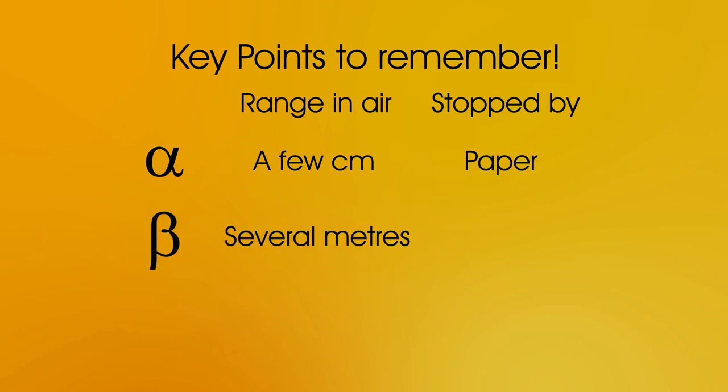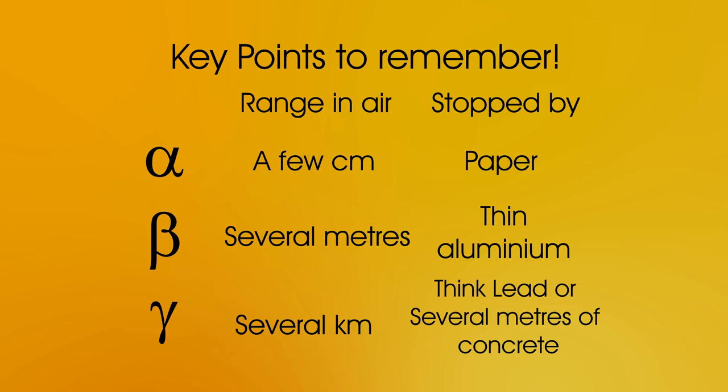Beta has a range of a few metres in air and is stopped by thin aluminium. And gamma has the longest range in air, a few kilometres, and can only be stopped by thick lead or several metres of concrete.